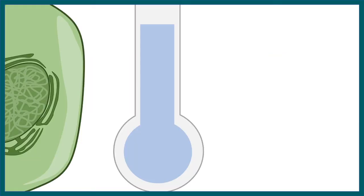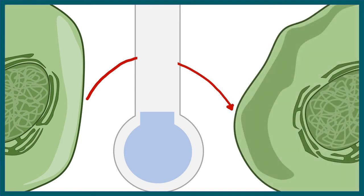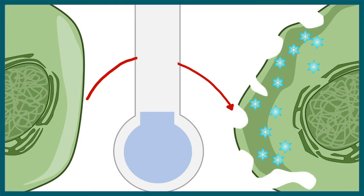When the temperature surrounding the cell drops rapidly, there is ice crystal formation inside the cells. This can lead to severe damage to the cell, and the cell eventually dies.